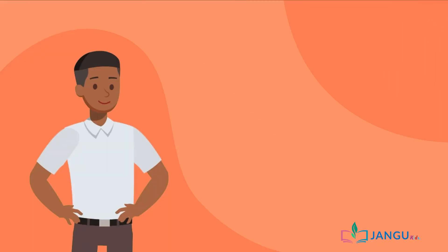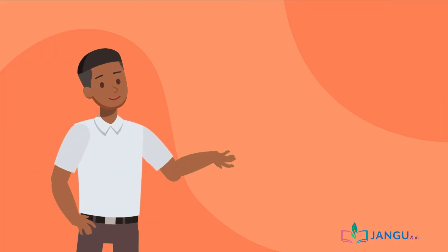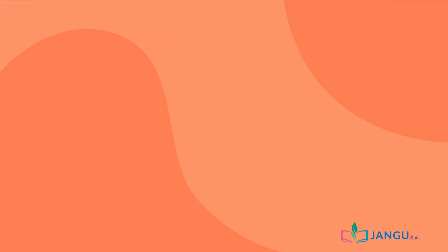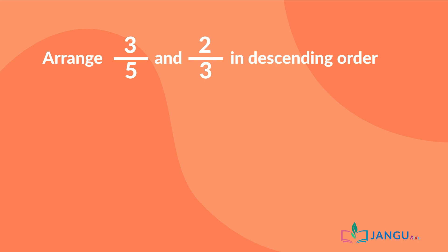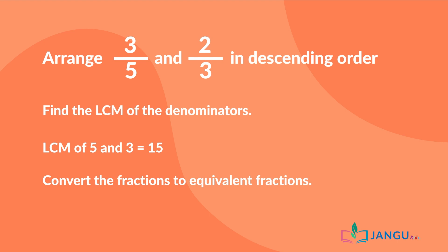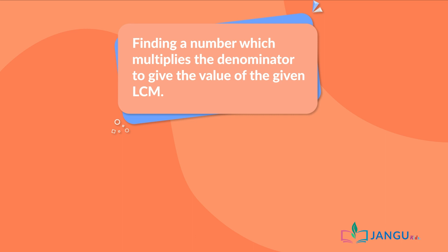Now there you have it. Good job, everyone! Let's try a second approach to arrange fractions using this example: arrange 3 over 5 and 2 over 3 in descending order. First, we need to find the LCM of the denominators. The LCM of 5 and 3 is 15. Next, convert the fractions to equivalent fractions by finding a number which multiplies the denominator to give the value of the LCM.